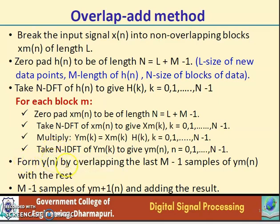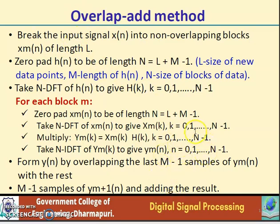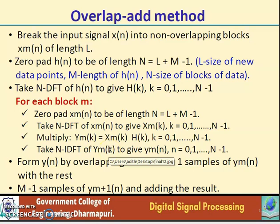We form y(n) by overlapping the last M minus 1 samples of ym(n) with the first M minus 1 samples of y(m+1)(n) and adding the result. That means each block data is terminated with M minus 1 zeros. The last M minus 1 points from each output block must be overlapped and added to the first M minus 1 samples of the succeeding block. That is why we call it the overlap-add method.